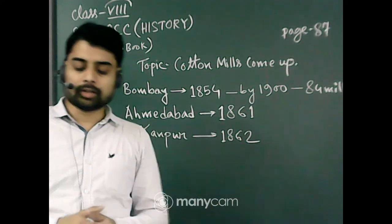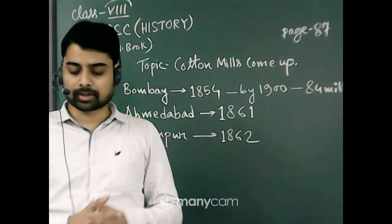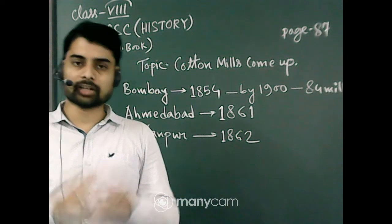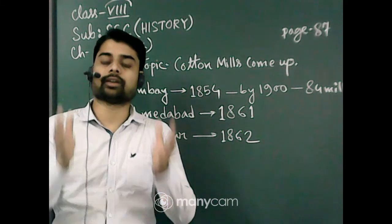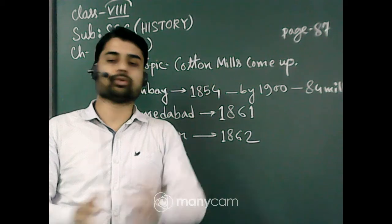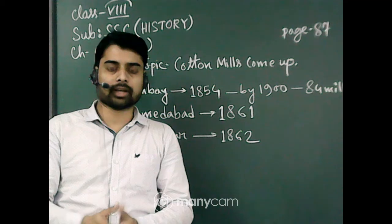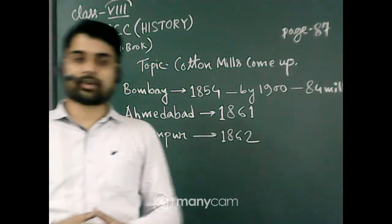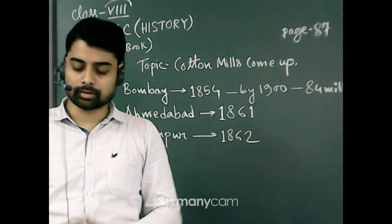Another reason was that it was very close to the vast black soil tract of South India. You know the Deccan Plateau region, the Regur soil of the Deccan Plateau is very useful for cotton cultivation. Bombay is situated in Western India and is very near to the black soil tract of Western India where cotton was grown.